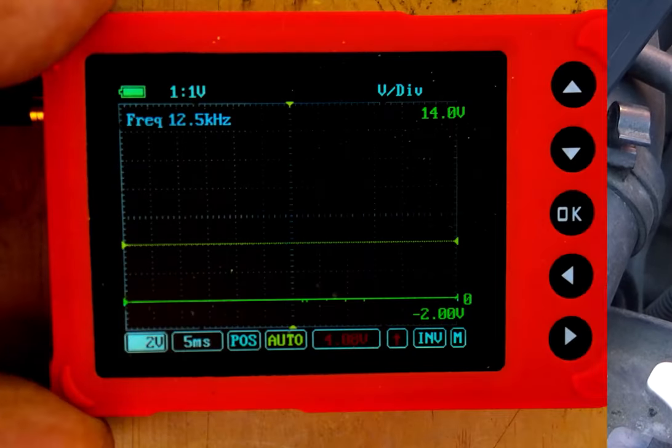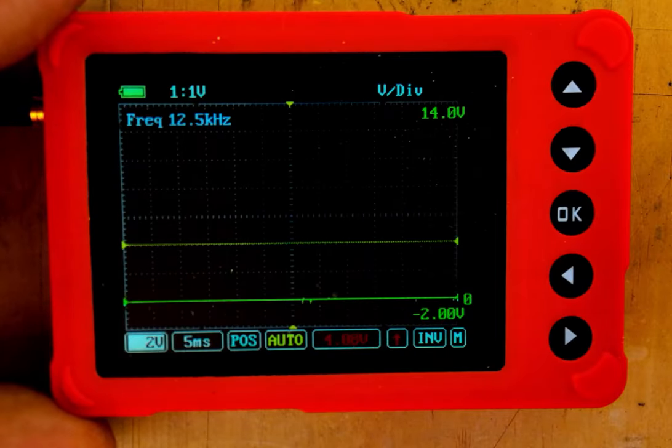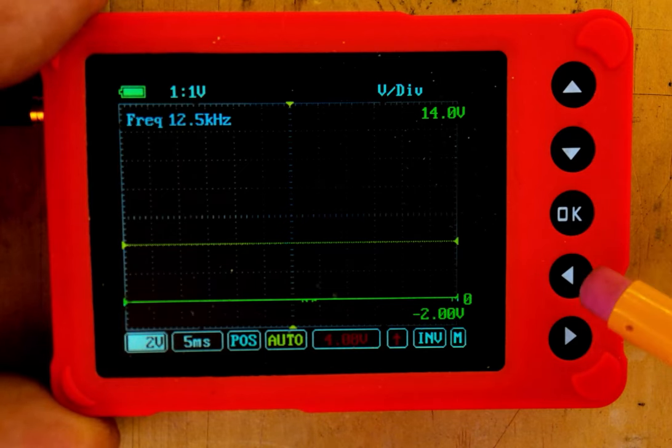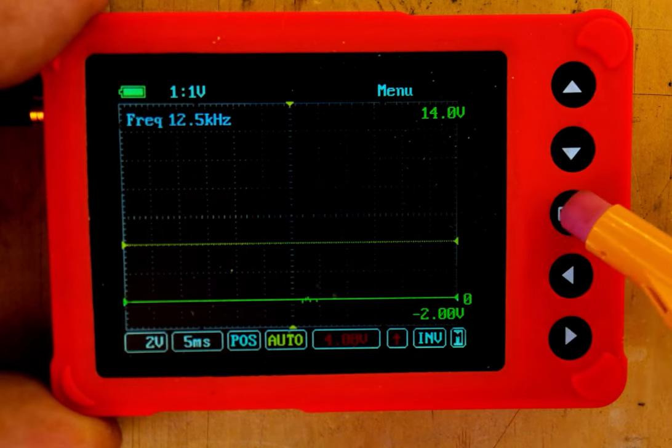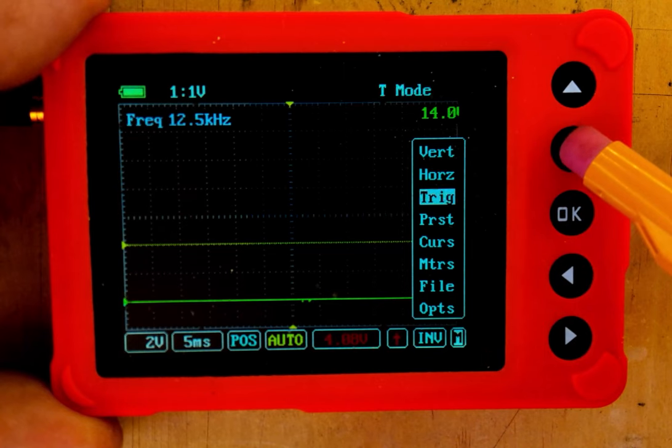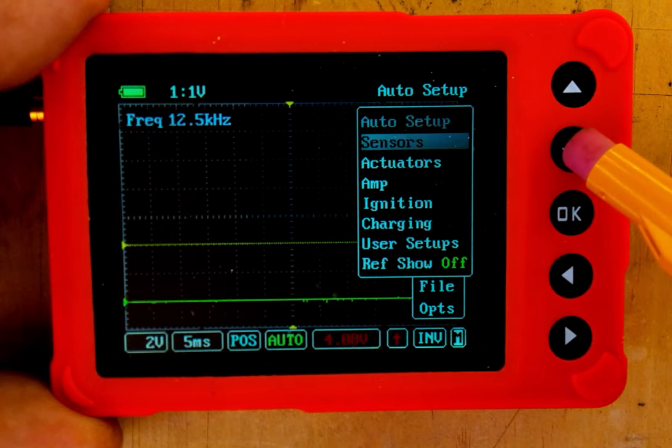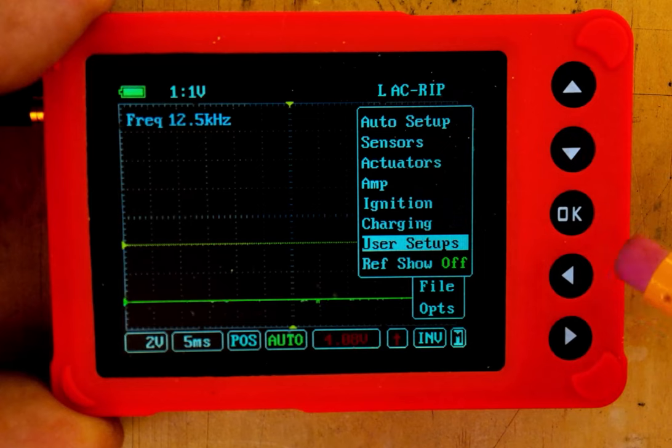Let's set this up to do a radiator cooling fan or maybe a condenser fan or possibly even a fuel pump. Back to our menu, let's come down to our presets, down to our user setups, and we want to find the one that I have labeled radiator fan.